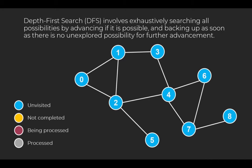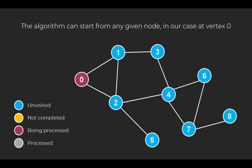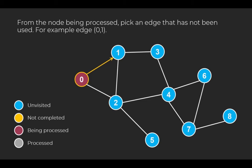Depth-first search involves exhaustively searching all possibilities by advancing if it is possible, and backing up as soon as there is no unexplored possibility for further advancement. Although the algorithm can start from any given node, we will start at vertex 0. Vertex 0 is now marked as visited, highlighted in a color that is not blue. From the node being processed, pick an edge that has not been used. We have two options here, either pick edge 01 or edge 02.